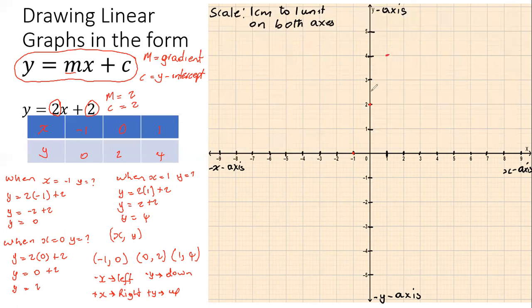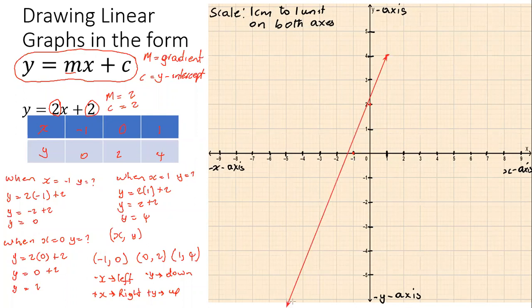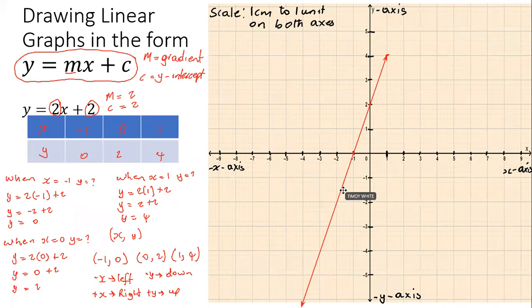Now that all three points are plotted, take your ruler, line it up against the three points, and draw a straight line as long as possible. There's the straight line for y = 2x + 2 — let me just adjust it slightly.